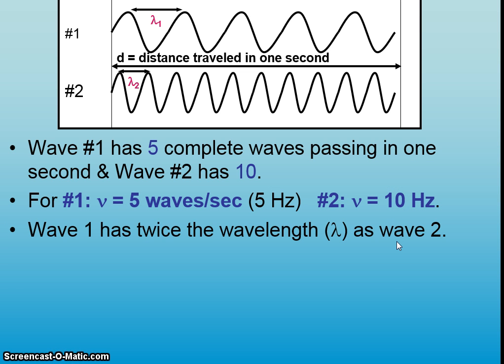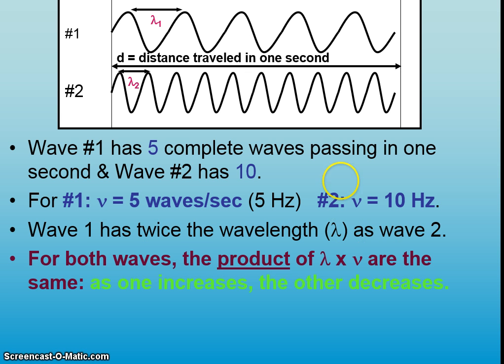Notice that the wavelength and the frequency are inversely proportional to each other. In other words, as one goes up, the other one goes down. Not only that, but if we multiply wavelength times frequency, we get a constant, always. We always get the same number. So if one goes up, the other one goes down by exactly the same amount. And so this is called being inversely proportional.